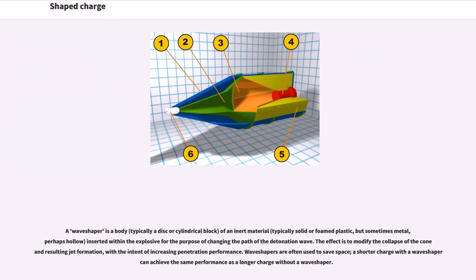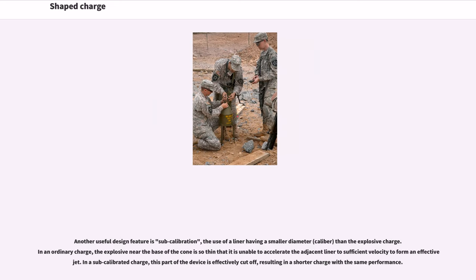A wave shaper is a body, typically a disc or cylindrical block, of an inert material, typically solid or foam plastic, but sometimes metal, perhaps hollow, inserted within the explosive for the purpose of changing the path of the detonation wave. The effect is to modify the collapse of the cone and resulting jet formation, with the intent of increasing penetration performance. Wave shapers are often used to save space. A shorter charge with a wave shaper can achieve the same performance as a longer charge without a wave shaper. Another useful design feature is sub-calibration, the use of a liner having a smaller diameter, caliber, than the explosive charge. In an ordinary charge, the explosive near the base of the cone is so thin that it is unable to accelerate the adjacent liner to sufficient velocity to form an effective jet. In a sub-calibrated charge, this part of the device is effectively cut off, resulting in a shorter charge with the same performance.